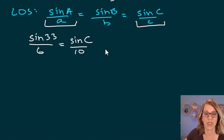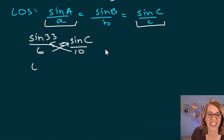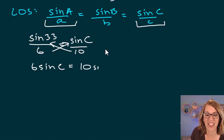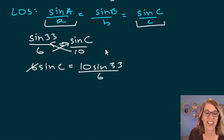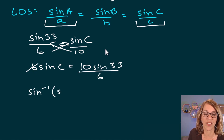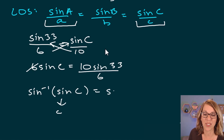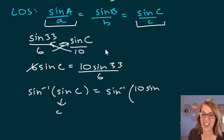I need to cross-multiply, so I take 10 times sin(33°) and 6 times sin(C). That gives me 6 sin(C) = 10 sin(33°). Dividing both sides by 6, I get sin(C) = 10 sin(33°) / 6. Finally, I apply sine inverse to both sides, so angle C equals sin⁻¹(10 sin(33°) / 6).